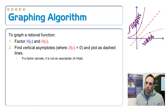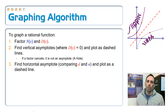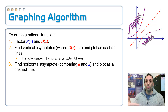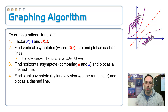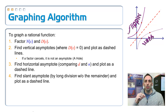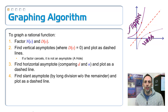Once I've found my vertical asymptotes, next I want to find my horizontal asymptote if it has one. I find a horizontal asymptote by comparing the degrees of the top and the bottom, then plot that as a horizontal dashed line. If I don't have a horizontal asymptote, maybe I have a slant asymptote if the degree of the top is one bigger than the degree of the bottom. I get that equation by doing division — the bottom divided into the top. I'll probably have to do long division, but occasionally synthetic division. You forget about the remainder and just take the quotient part and plot that as another dashed line.